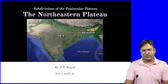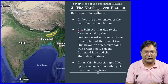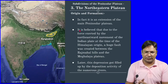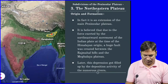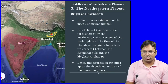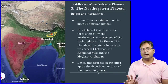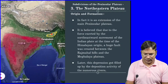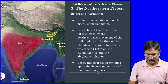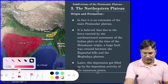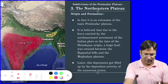Let's start by reading about this Plateau. If we see the origin and formation, looking at the location on the map — this is the complete Peninsular Plateau, the Main Peninsular Plateau, shown as the darker area. But it also has one extension in the North Eastern states of India, which can be seen here — this area marked by the red-yellow color.